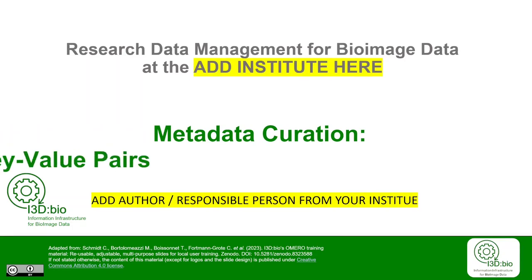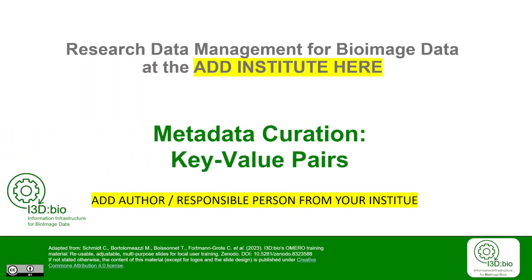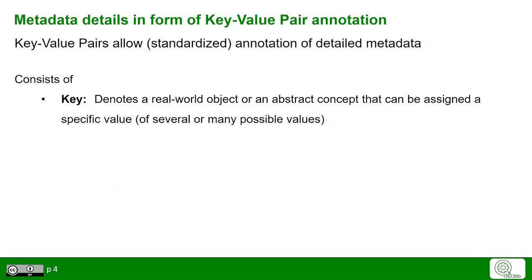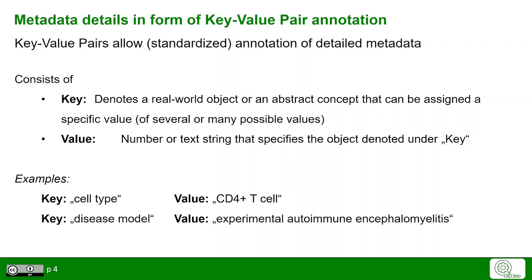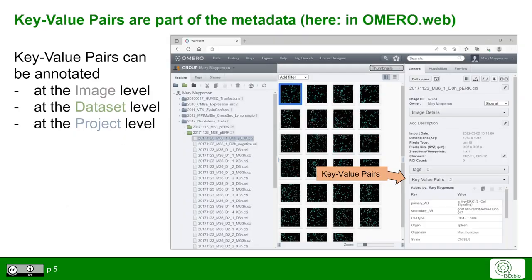In this subchapter on metadata curation, we now focus on the practical aspects of key-value pair annotation in OMERO. Key-value pairs consist of a key denoting some object or abstract concept and the value, which is the specific value for that key — for example, cell type with value CD4 positive T cell. Key-value pairs, like tags, are part of the metadata in OMERO found under the General tab, and can be applied at all levels: images, datasets, and projects.